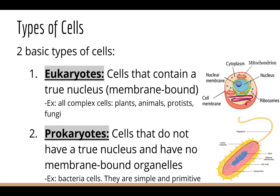Prokaryotes are cells that do not have a true nucleus, so there's nothing surrounding the genetic material, and they don't have any membrane-bound organelles. Examples of this would be bacteria cells. They're very simple and they're primitive. The first types of cells on Earth were prokaryotic cells, but they're also the longest surviving cells — prokaryotes are still found today on Earth and have survived for millions of years.